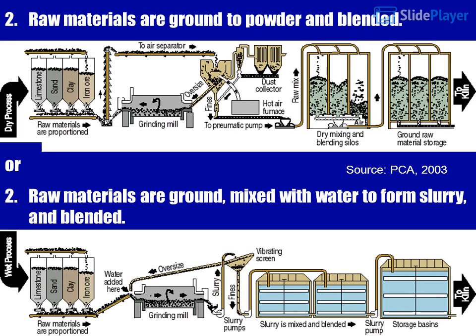Step 2: Raw materials are ground, mixed with water to form a slurry, and blended. Source: PCA 2003, Figure 2-3, steps in the traditional manufacture of Portland cement.